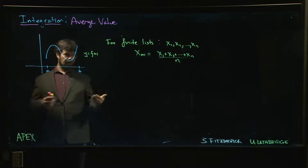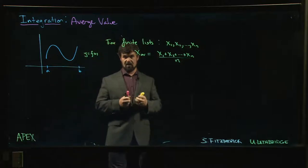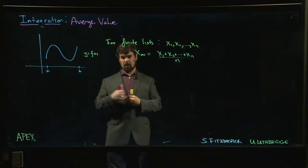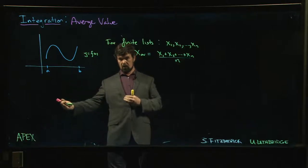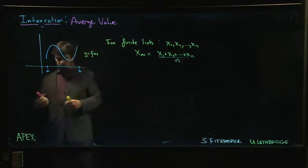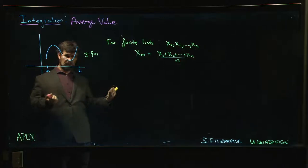You're driving from Lethbridge to Calgary, or between wherever you live and some other city. You know how far you went, you know how long it took you. You can calculate the average speed as distance divided by time. But maybe you actually knew at every moment in time what was your velocity. How could you take that knowledge of your velocity at every moment in time and use it to figure out the average? That's what we're looking at here.